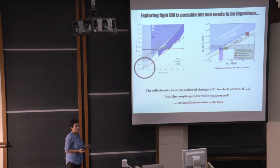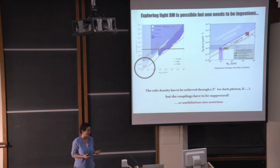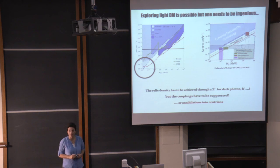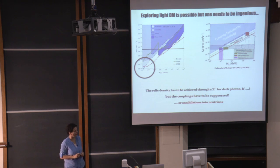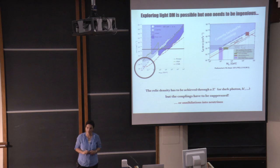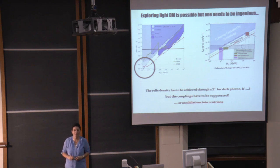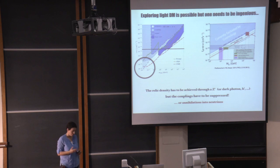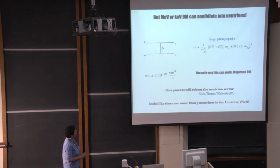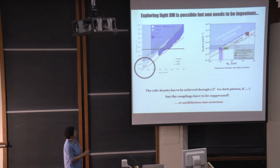We are in a problem — that's exactly the situation we need to sort out. We need to find a way to test whether dark matter truly doesn't interact with us, or whether we have misunderstood something: perhaps the CMB, perhaps some modification of gravity. Whatever it is, we need to determine whether this small-coupling scenario is the right solution.